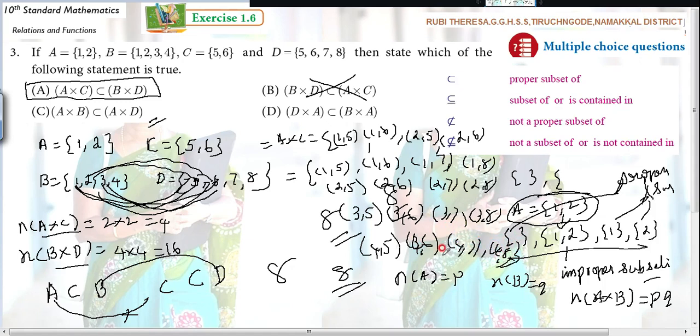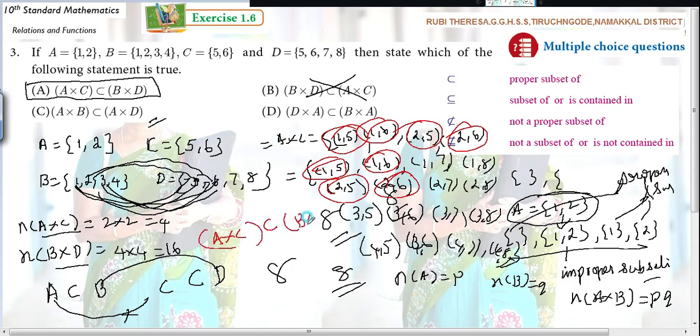But what are the pairs you want? (1,5), (1,6), (2,5), (2,6). All these 4 are here. So A×C is the proper subset of B×D.